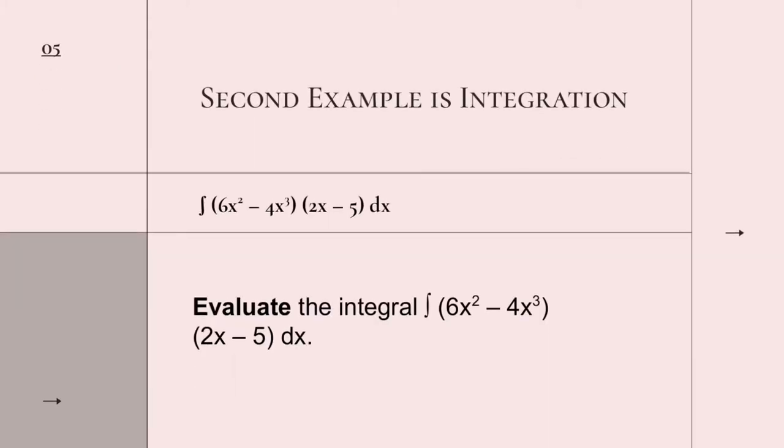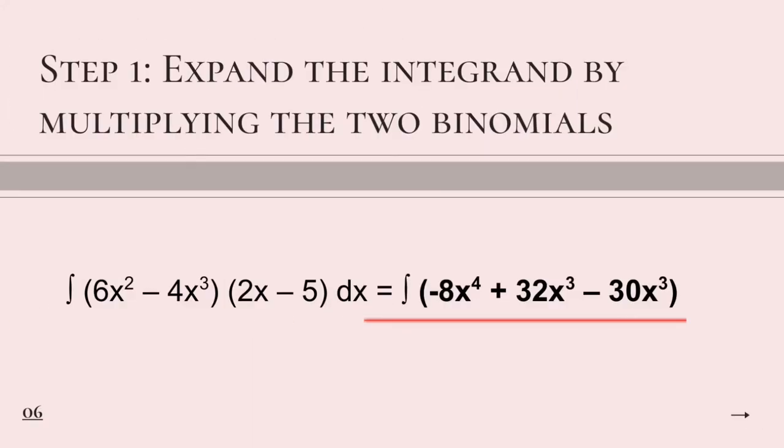This time, we are going to solve for the integral equations. We are going to solve for the anti-derivative of this function given as the integration of quantity 6x squared minus 4x cubed and quantity 2x minus 5 dx. As we can see, it involves two binomials. And what we are going to do for the first step is to distribute them using the FOIL method. We will get negative 8x raised to the power of 4 plus 32x cubed minus 30x squared.